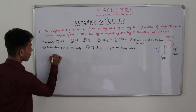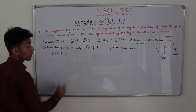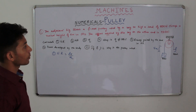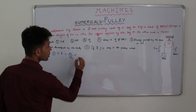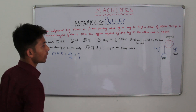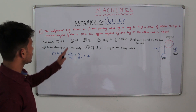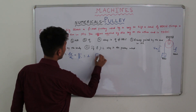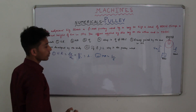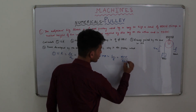Let us find the first one — the velocity ratio. Velocity ratio is the ratio of displacement of effort to the displacement of load. Displacement of effort equals 5 meters and displacement of load is also 5 meters, so velocity ratio equals 1. The second one is mechanical advantage. Mechanical advantage equals load divided by effort. Load is 400 Newton and effort is 480 Newton.